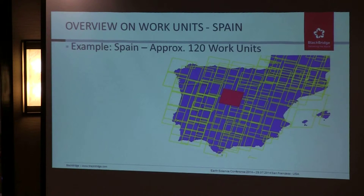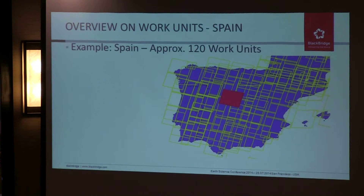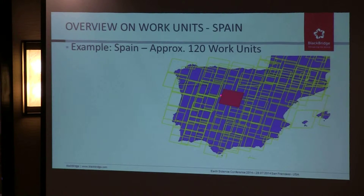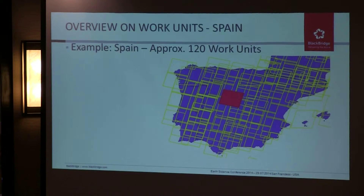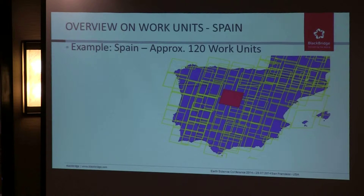As an example, Spain was made up of 120 work units. As you can see, this is not a perfect chessboard — there is significant overlap in some images. In some cases it was not necessary to process all 120 work units, but for each country we had to process at least 80% of them.